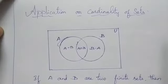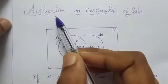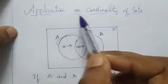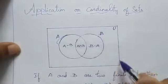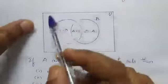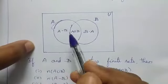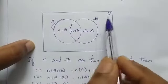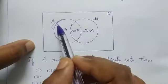Hi students. Today, application on cardinality of sets. See this diagram. Already you know this is the universal set. Here you have two sets, two subsets of the universal set A and B.